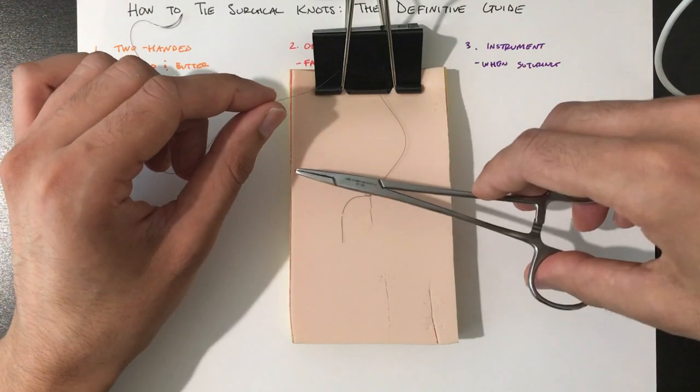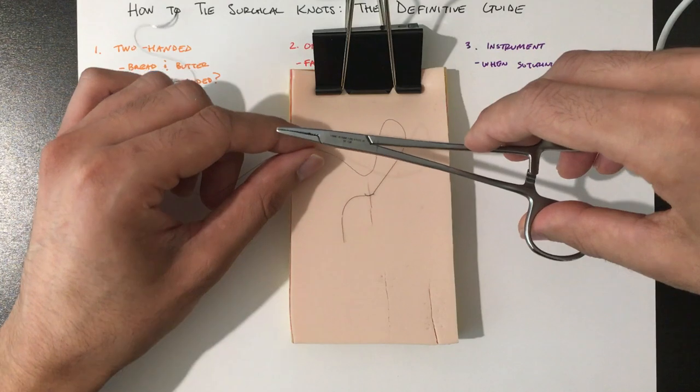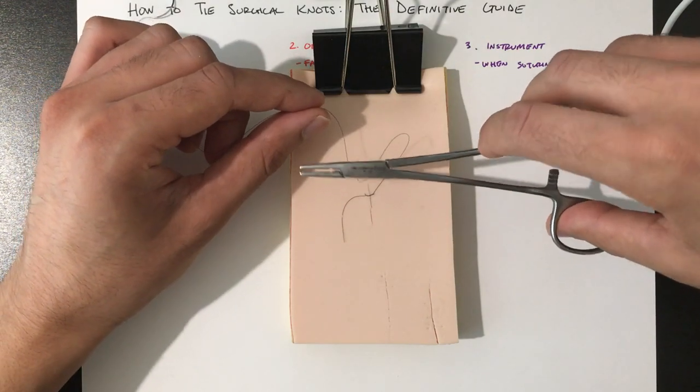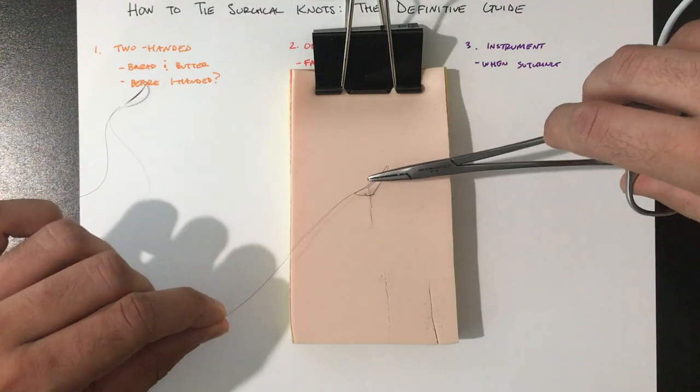So again, needle in the middle, this is the opposite way now. Wrap from outside in, grab the short end, and pull up.